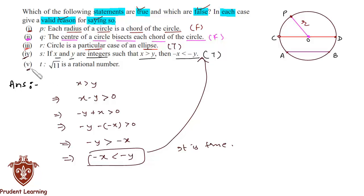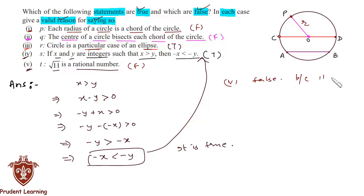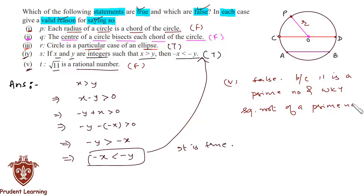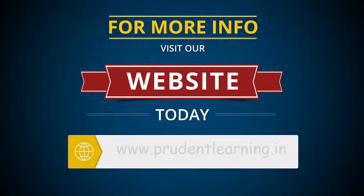The fifth and last statement: √11 is a rational number. This statement is false because 11 is a prime number, and the square root of a prime number is always irrational. This brings us to the end of this question.